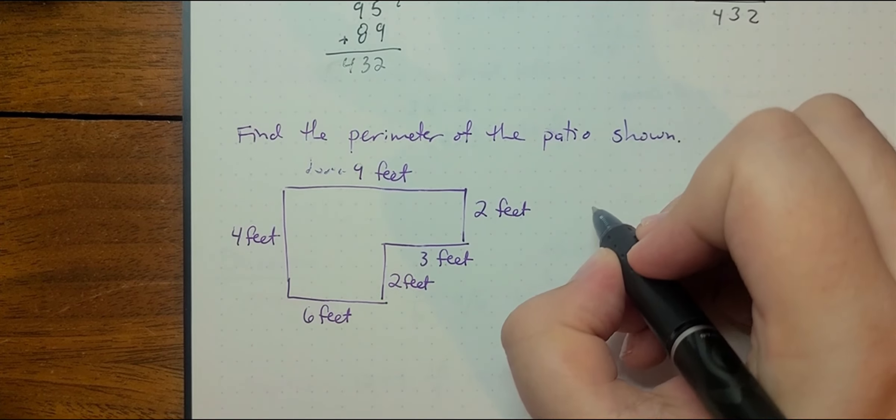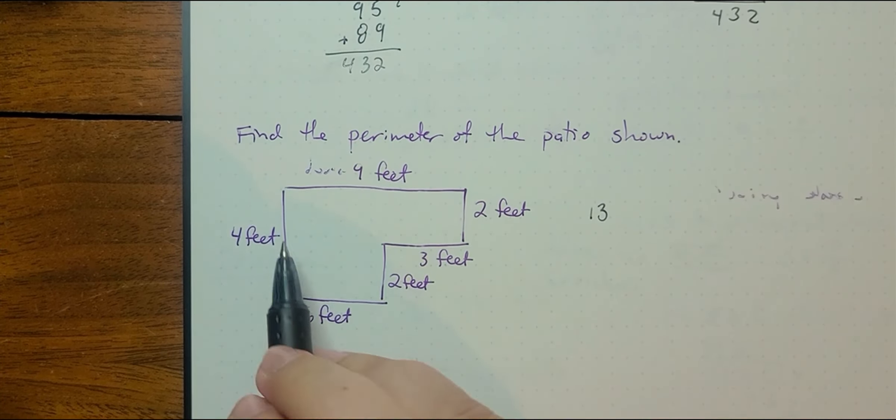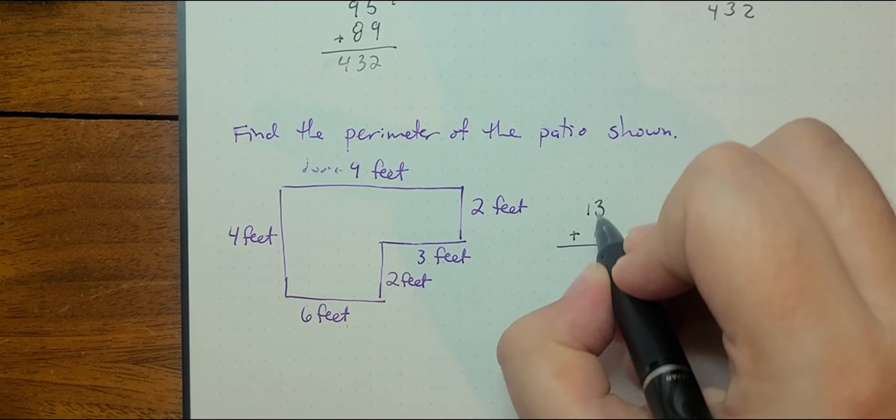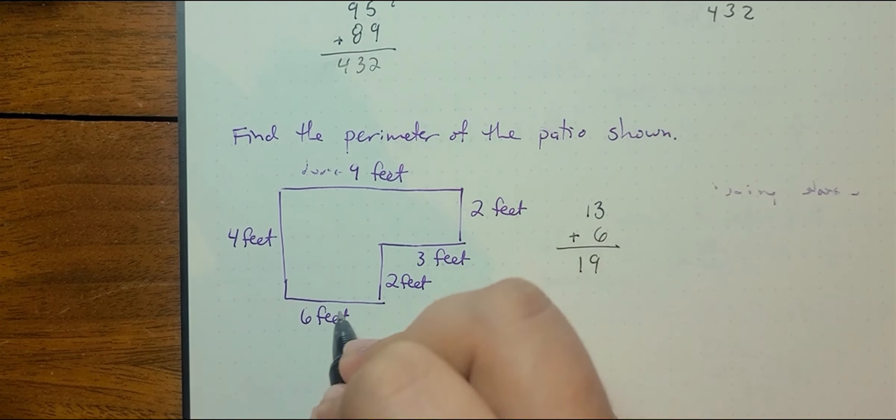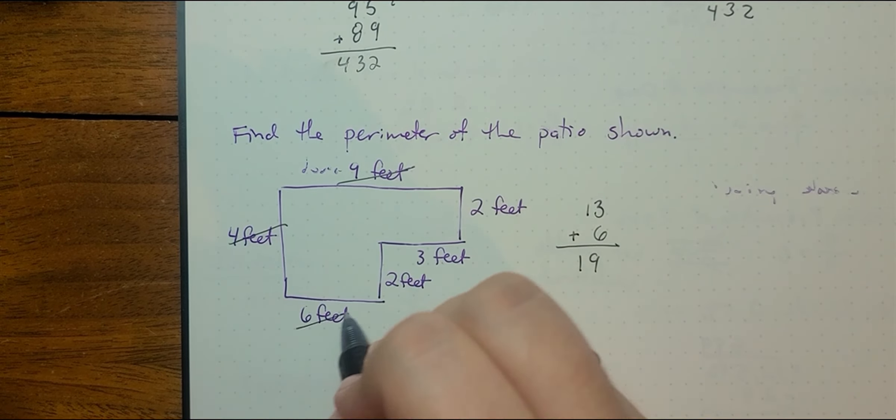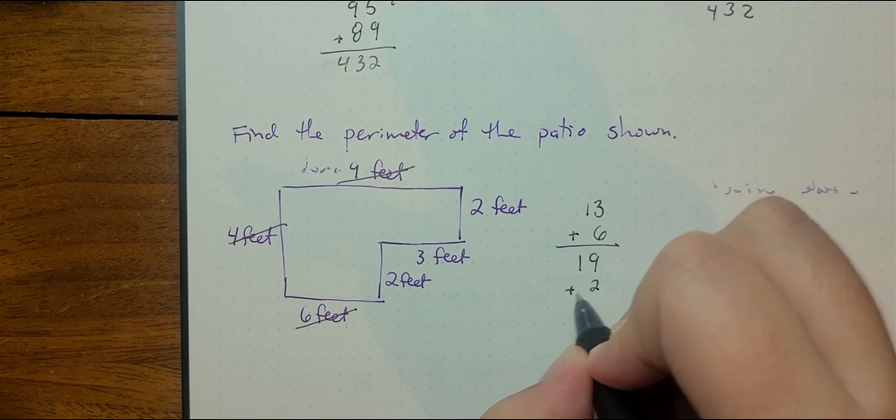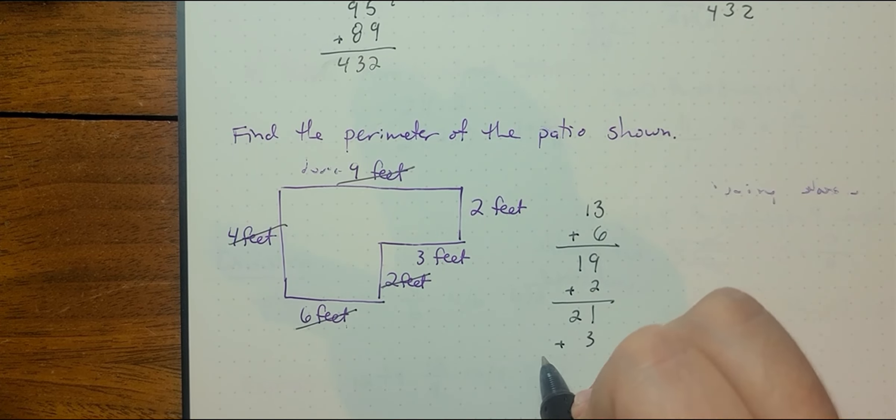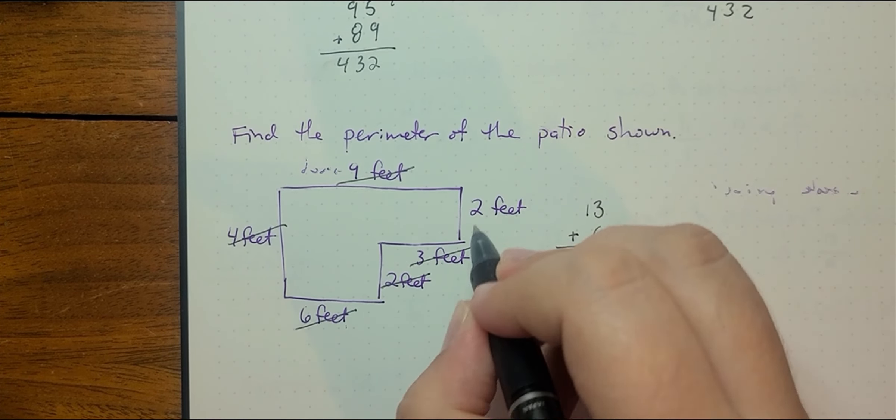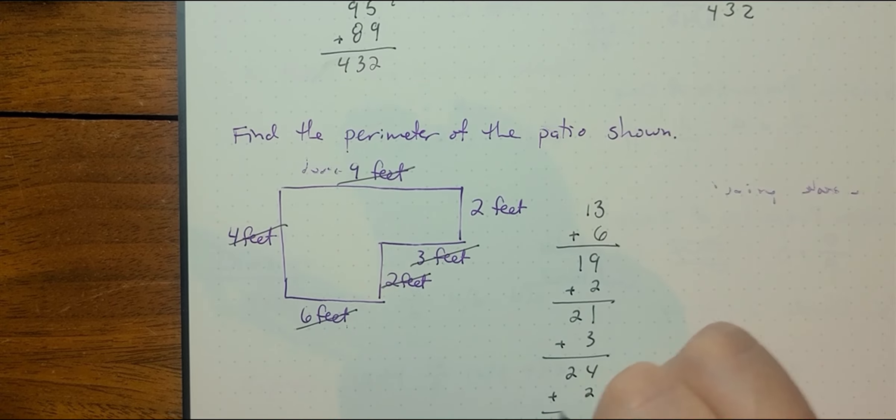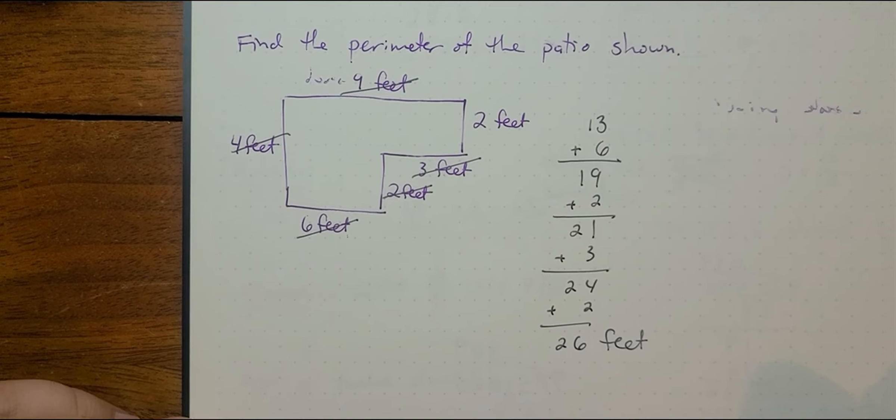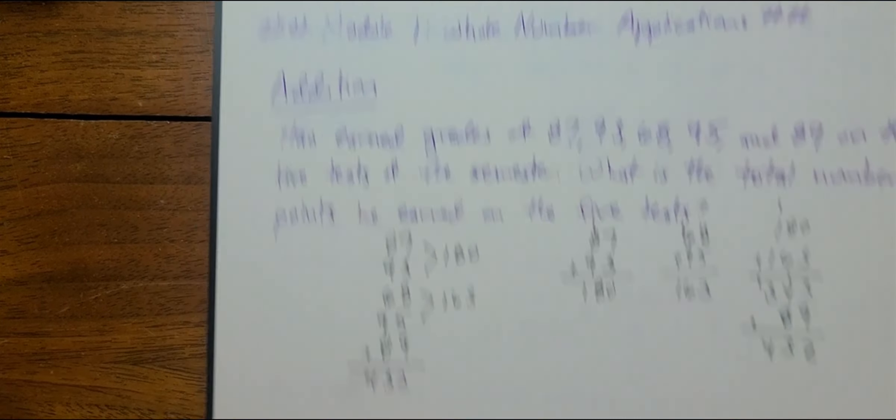So I'm going to do nine plus four. I know that that's 13 plus six, which is going to give me 19. I'll just cross these out as I use them. Plus two is going to give me 21. Plus three is going to give me 24. Plus another two, it's going to be 26. So the perimeter of this patio is 26 feet.